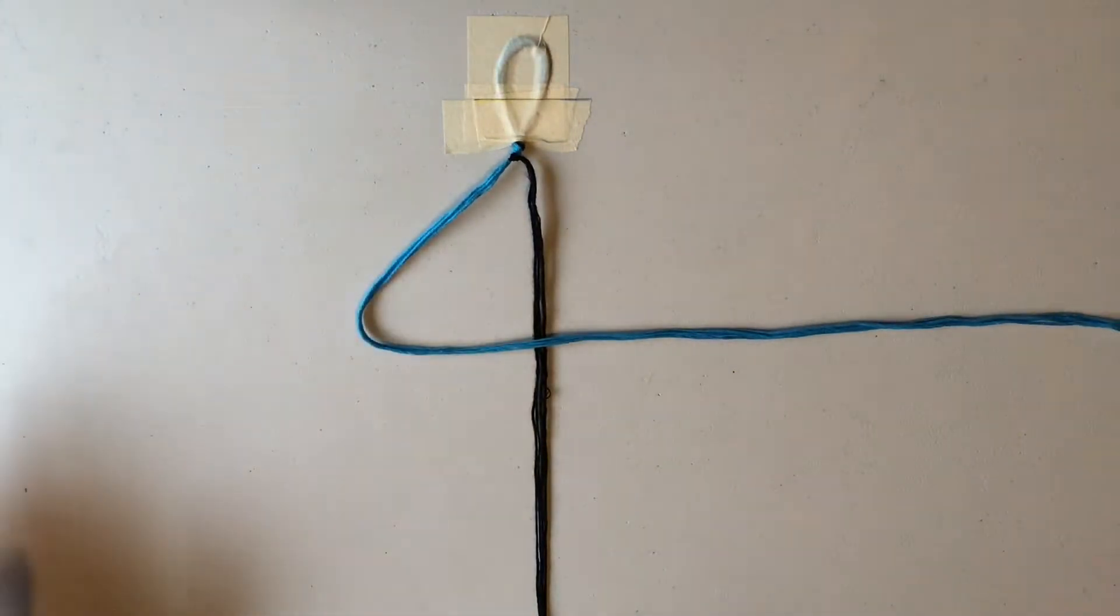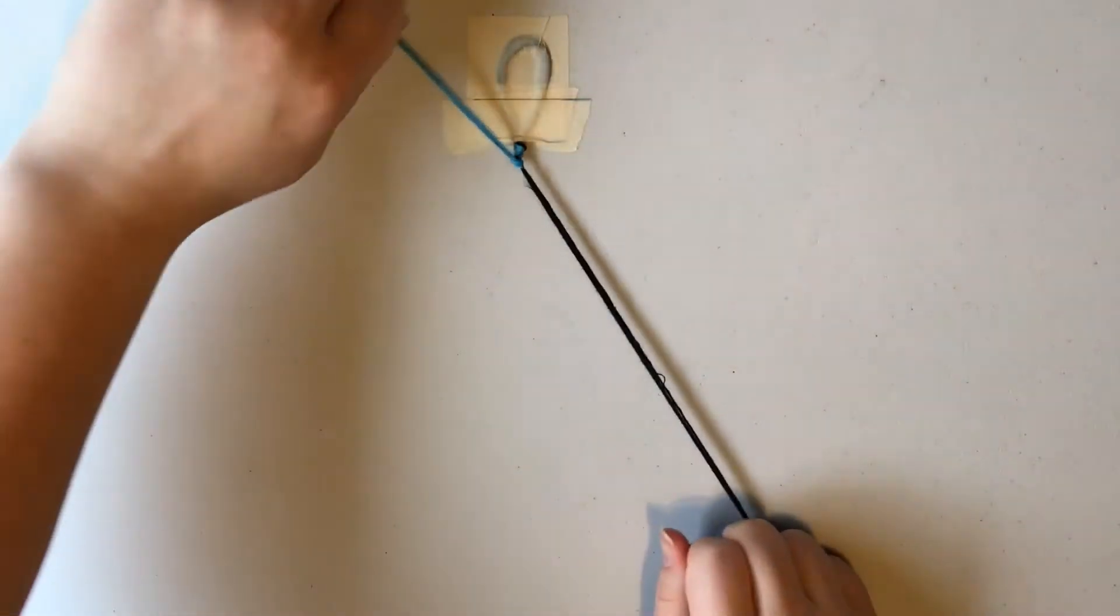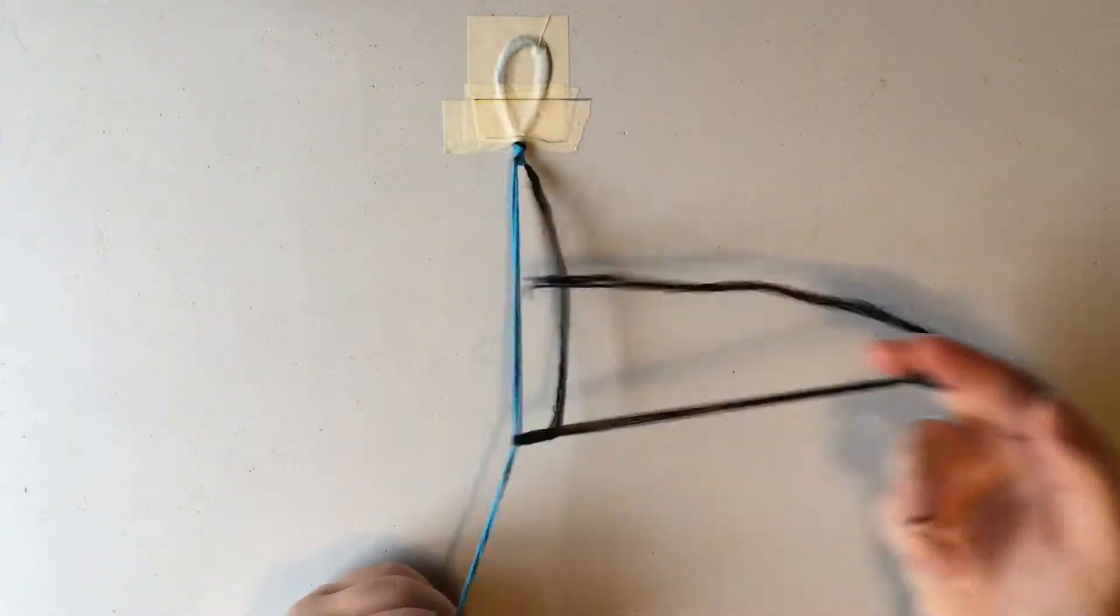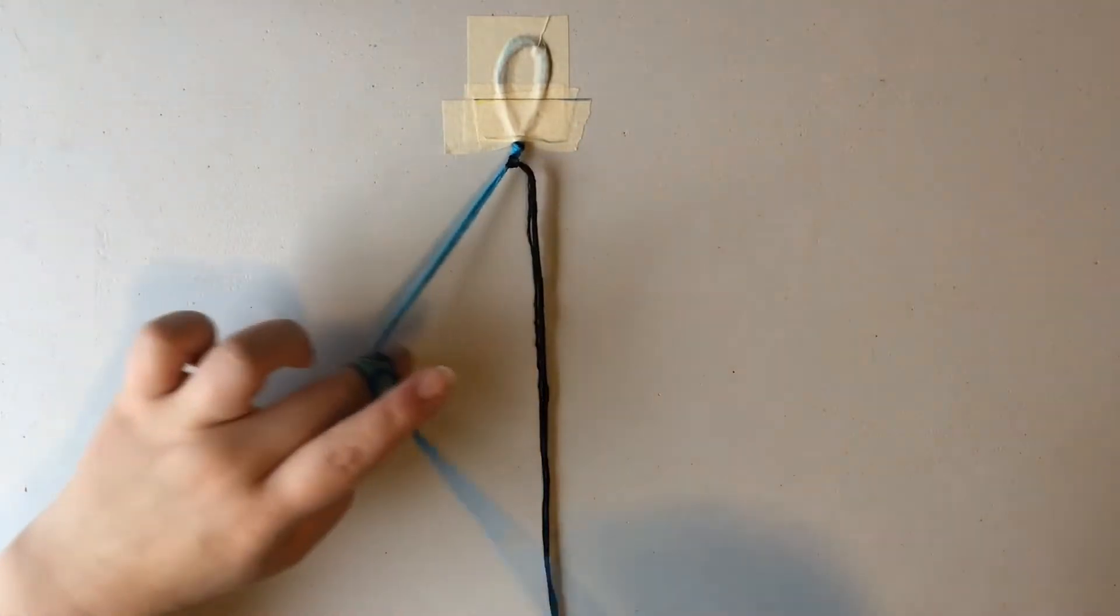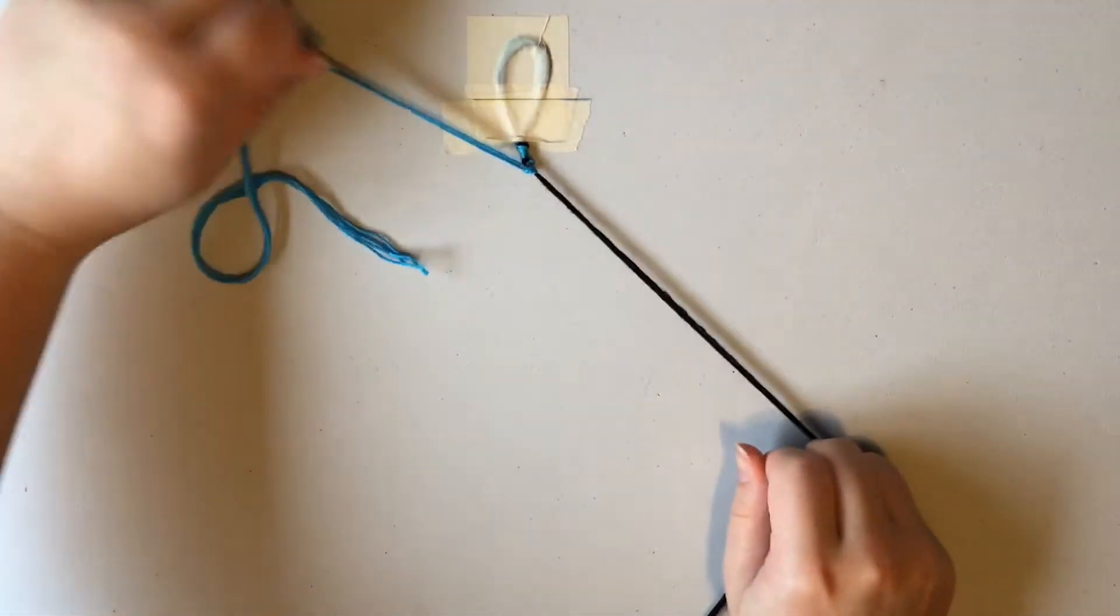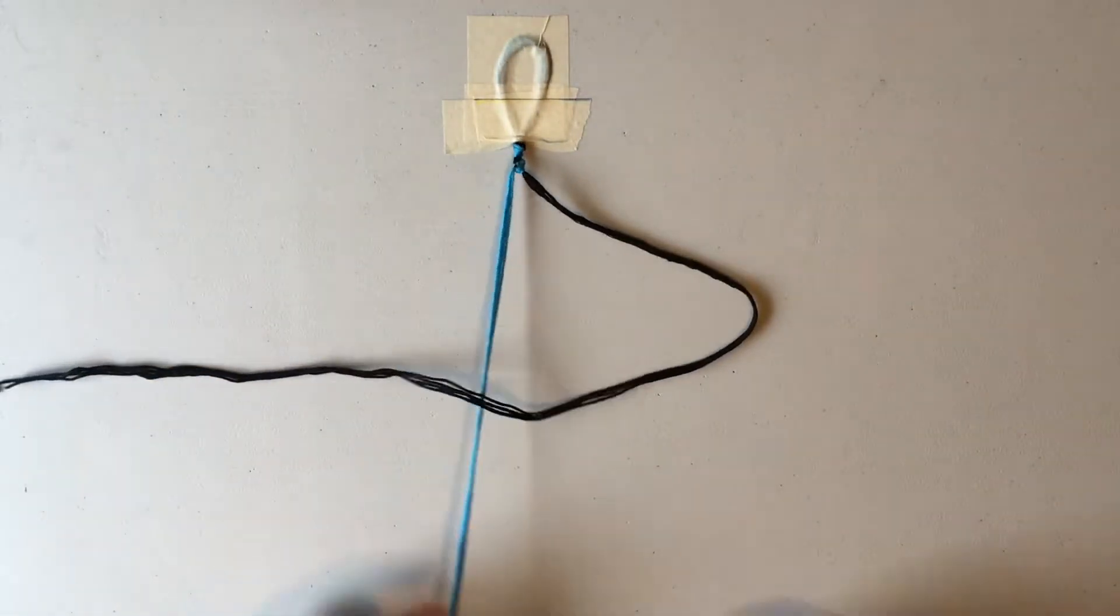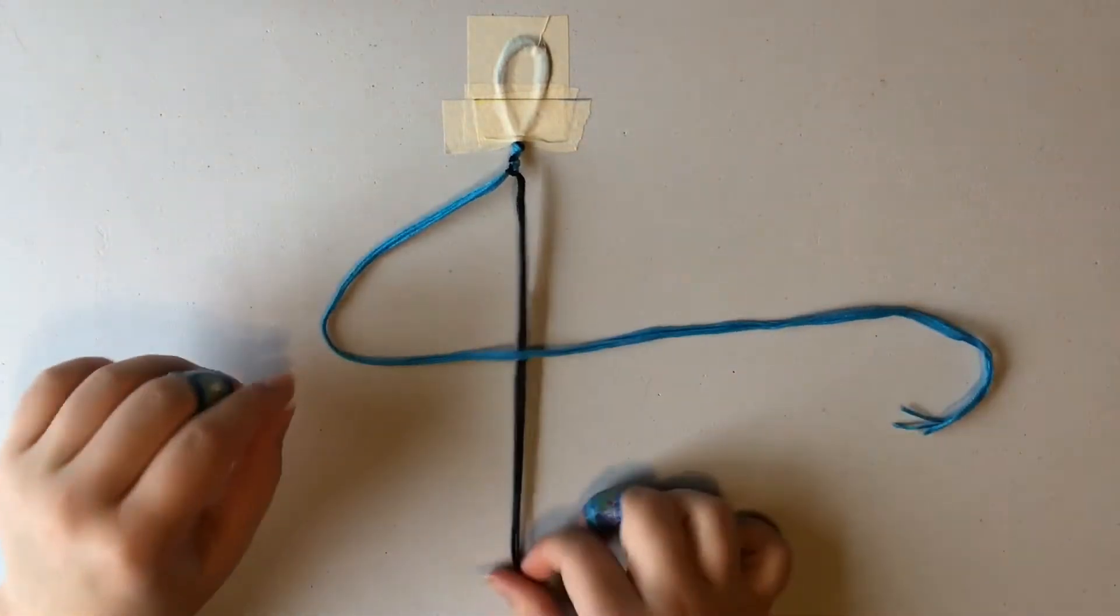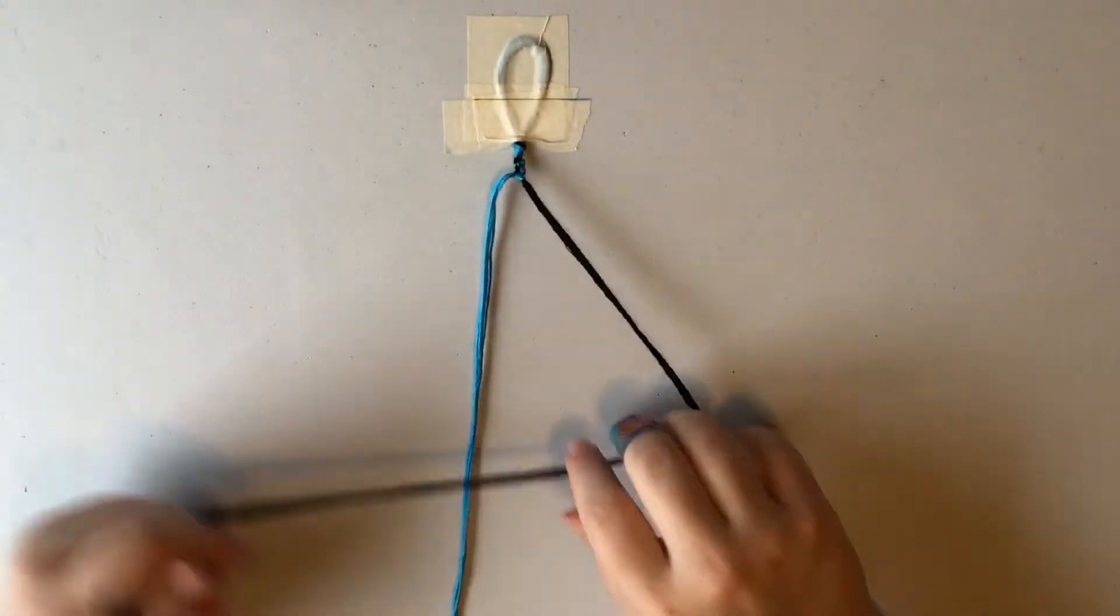So then you're going to make a four, pull that through and tighten it. Then make a backwards four, pull that through and tighten it. Make a four, pull that through and tighten it. And you're just going to keep going until you get to the end of your strings.